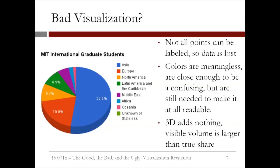The difference between Asia and Africa's colors is subtle. And of course, the 3D effect on the pie chart adds nothing, but does play a subtle trick on the eye. Due to the 3D effect, the blue and red segments are actually larger looking, which at a glance may lead the viewer to overestimate their size.